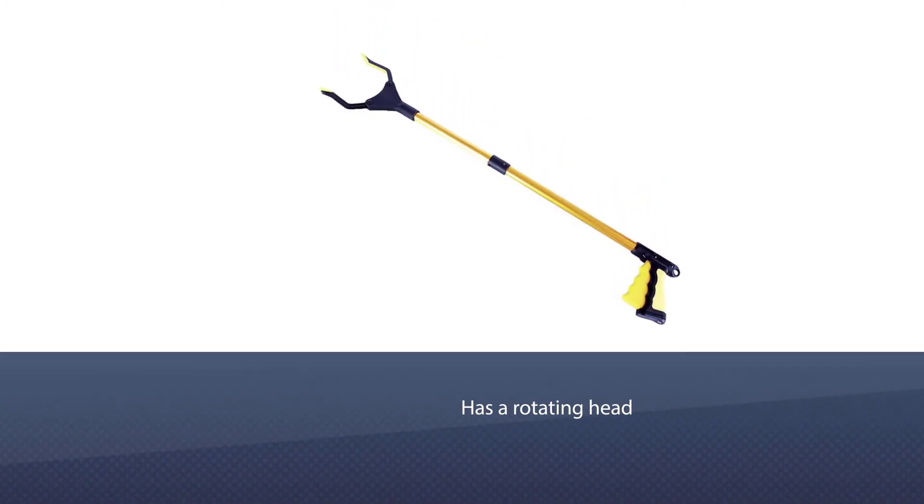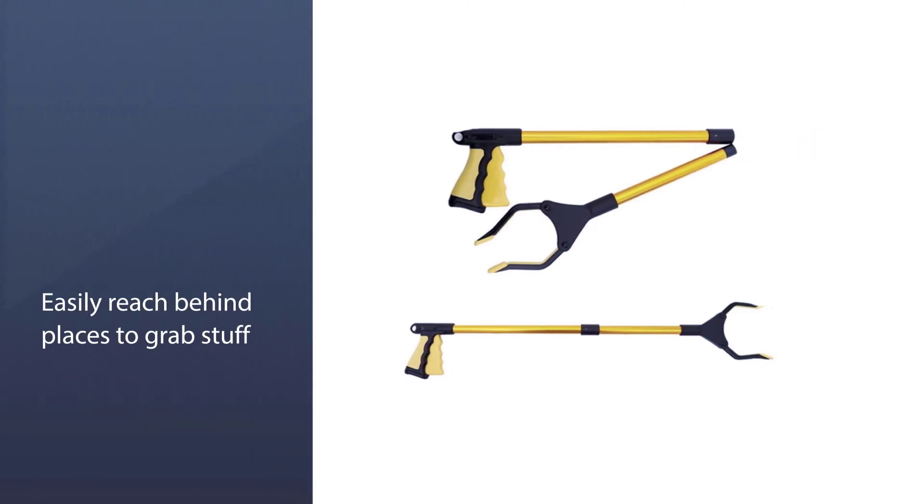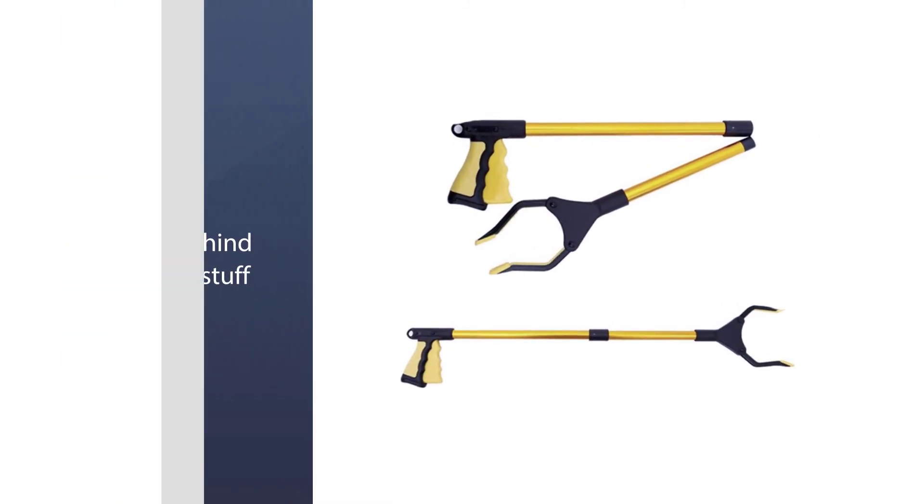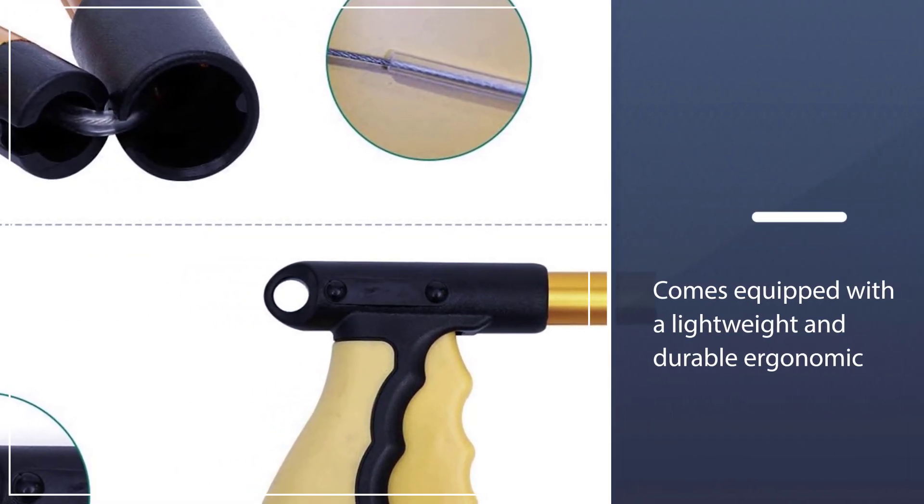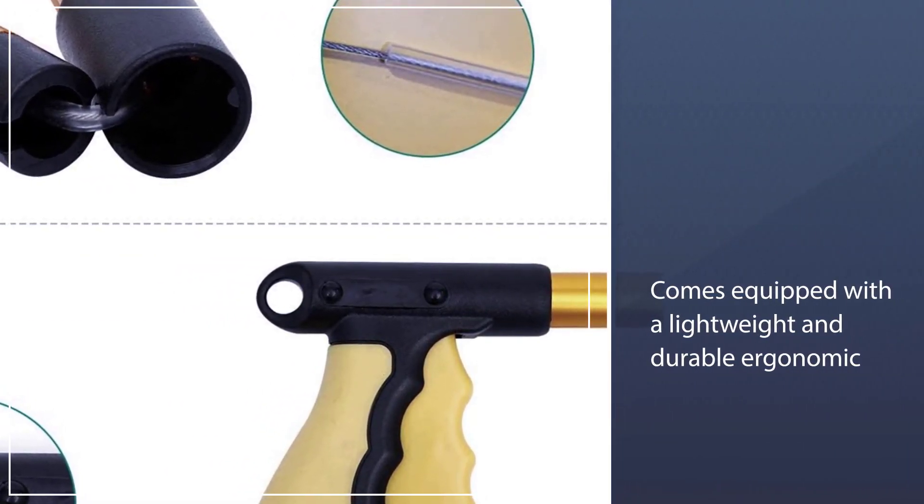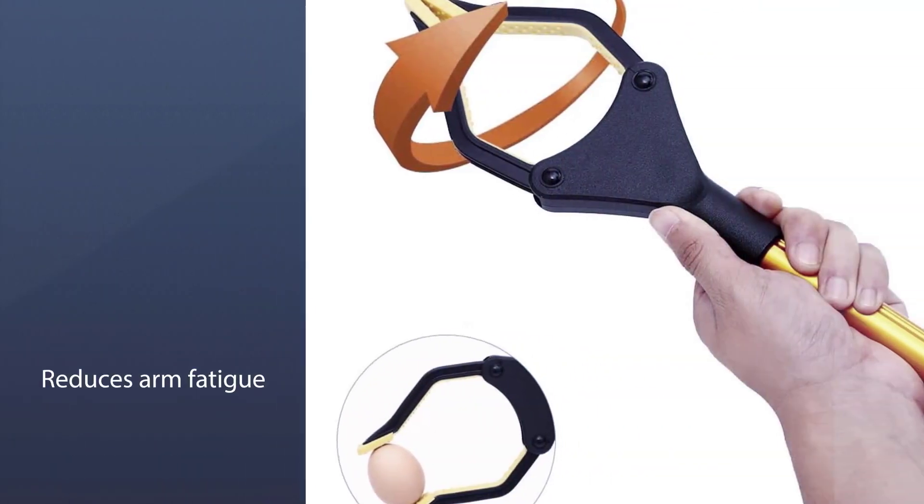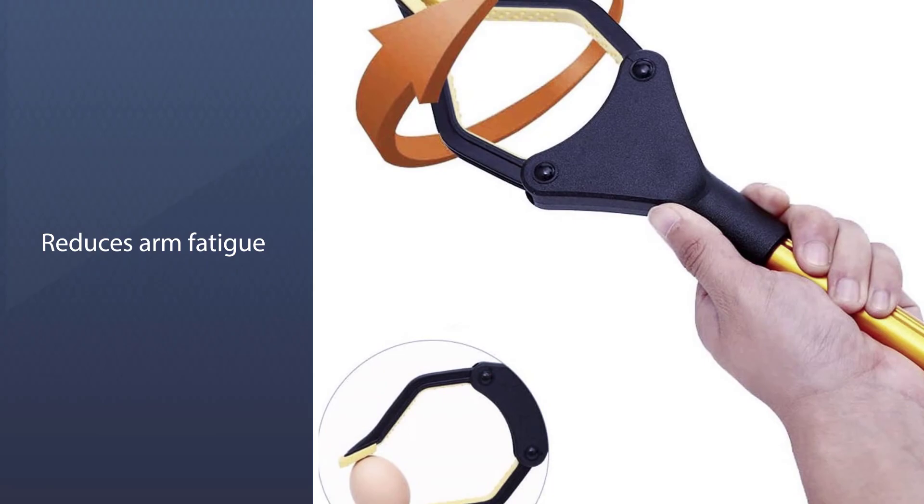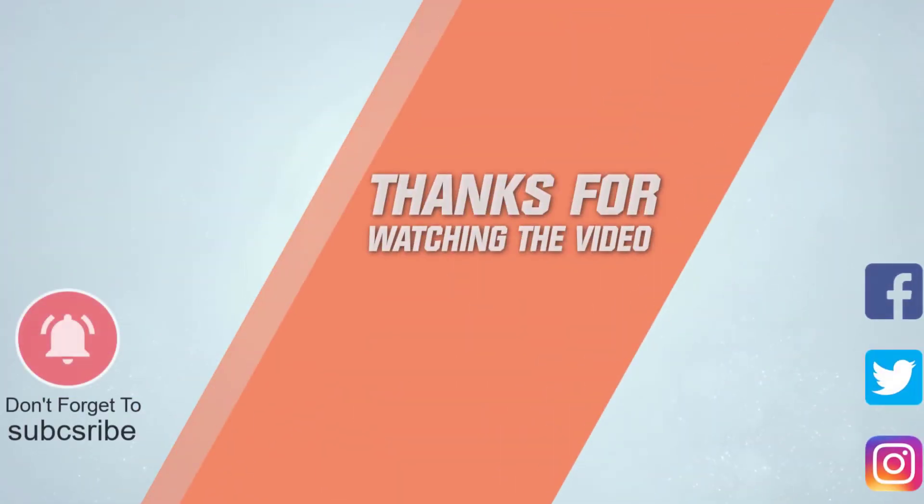The zhenzhen grabber reacher tool comes equipped with a lightweight and durable ergonomic handle that reduces arm fatigue and provides a secure grip. You can also adjust the length of the grabber reacher tool to easily get into smaller spaces and it's foldable, making it easy to carry around and store. For more details click the link in description. Thanks for watching the video.